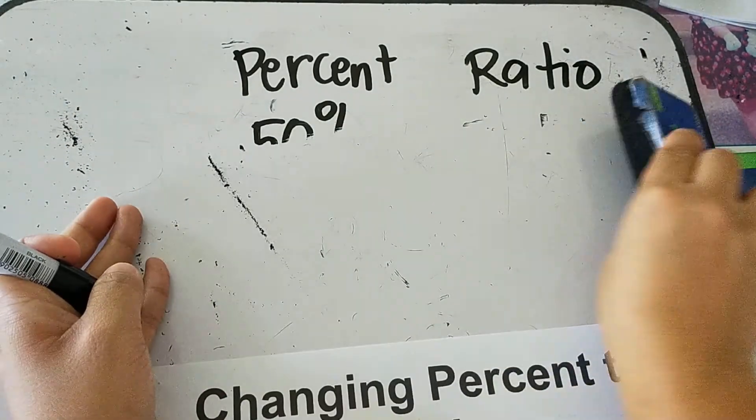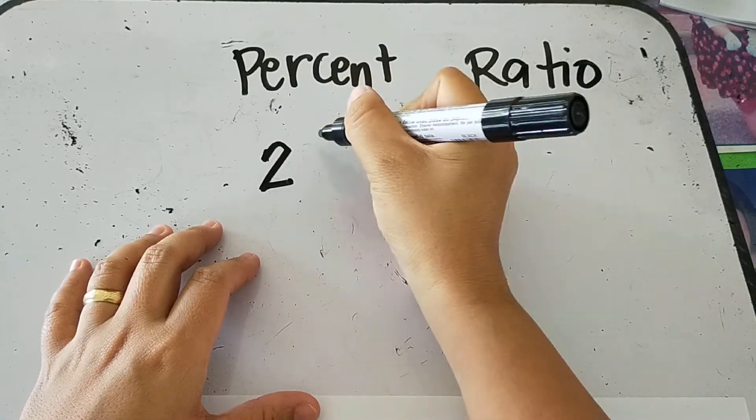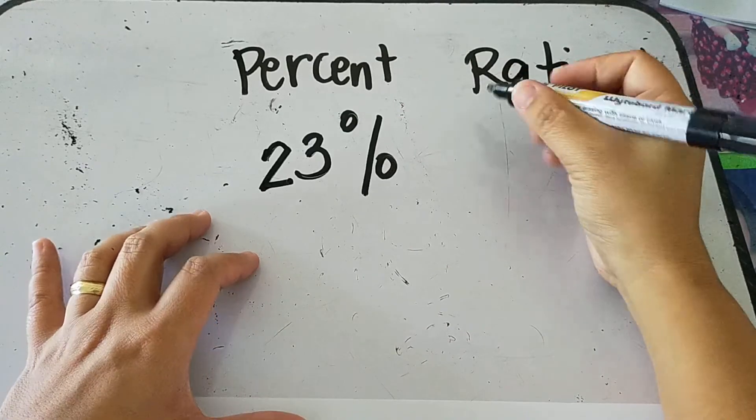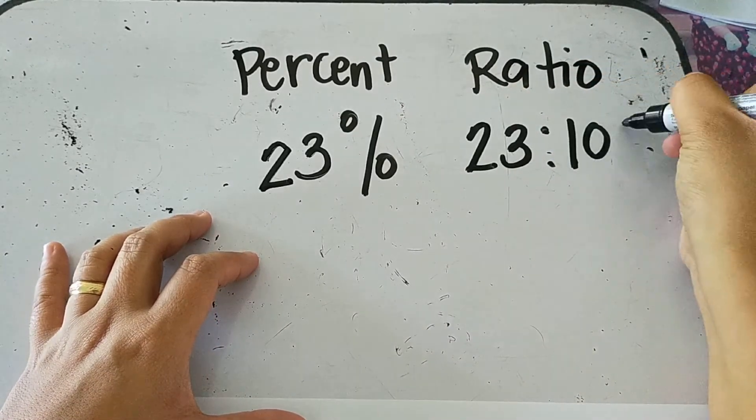So another. This is written as 23 is to 100 in ratio form.